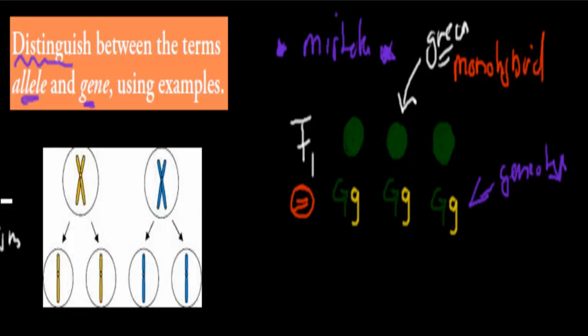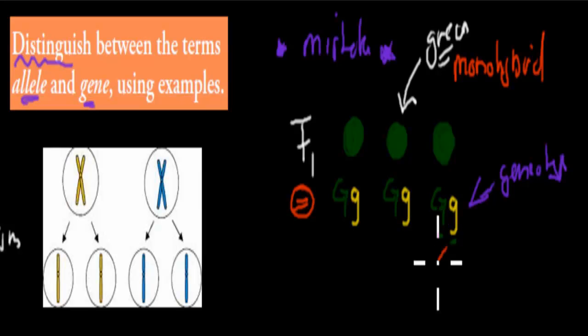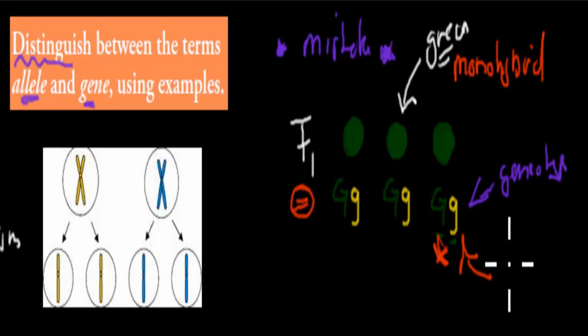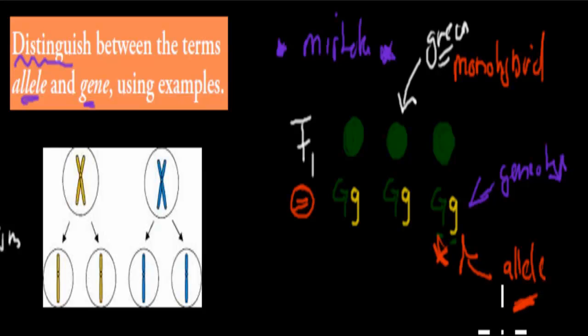I said they had one green gene and one yellow gene — this is the green gene, this is the yellow gene — and that was where I made my mistake. We should not be using the words 'green gene' and 'yellow gene'; we should be using the word allele.